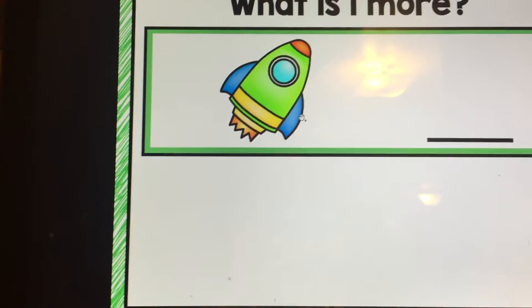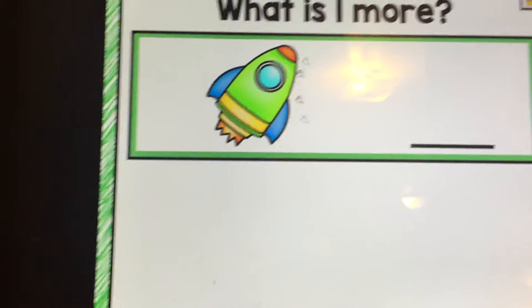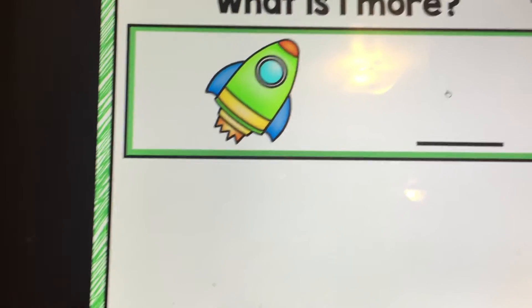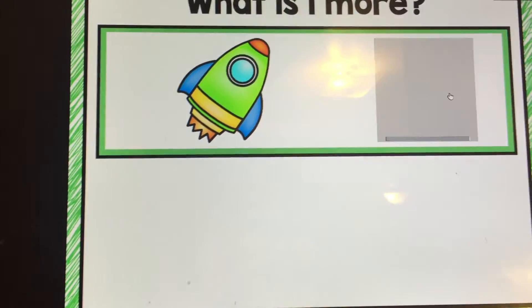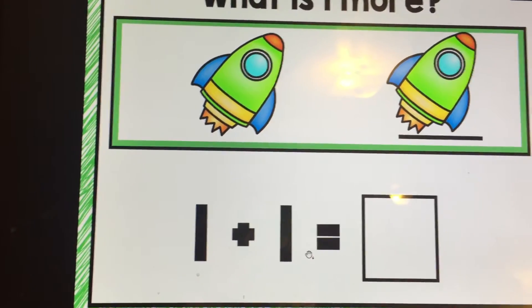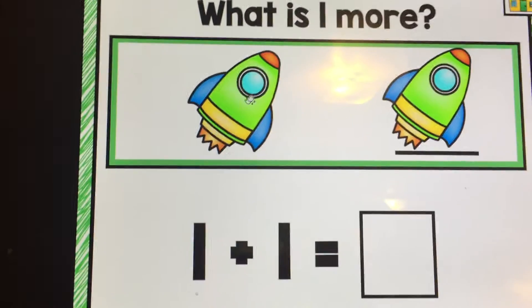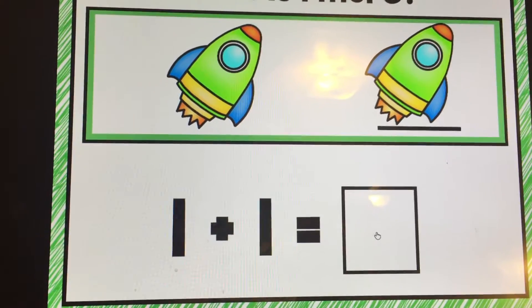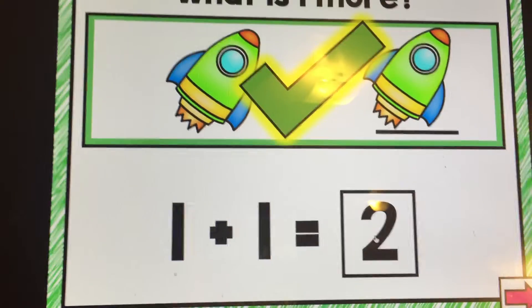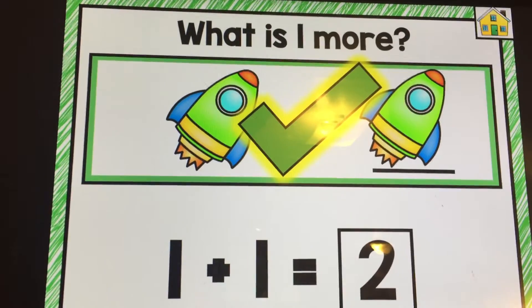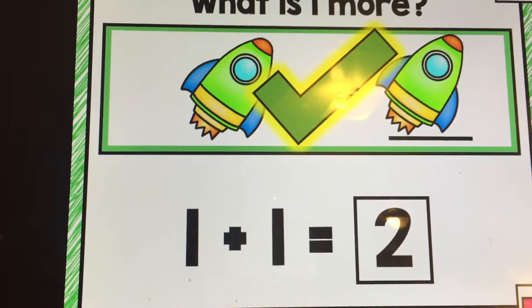What is one more? If I have one rocket ship and my mom or dad buys me one more, how many will I have? So you can see the line here, you click here and it will bring up one more. What is one plus one? One and one more. How many is that? Let's count them. One, two. One plus one equals two, and then someone can come up and click on this box to bring up the number two. And there it is. There's your correct answer and a check mark comes up to verify that.